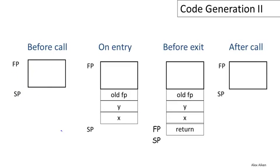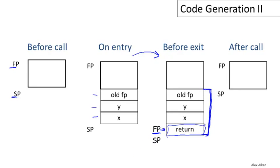Before the call, we have the caller's frame pointer and the current stack pointer. On entry to the function, after the caller's side of the calling sequence, the stack holds the old frame pointer and the two arguments, with the stack pointer pointing to the next unused location where the return address will go. After the jump-and-link, the return address is pushed and the frame pointer moves to point to the top of the new frame. After the call completes, the entire activation record is popped off the stack and we're back to the same state — function calls preserve the stack invariant.